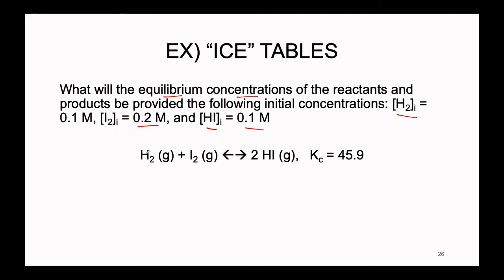We have the reversible reaction H2 + I2 ⇌ 2HI, with an equilibrium constant Kc equal to 45.9, meaning a pretty equal balance between reactant and product. We're given initial concentrations: H2 = 0.1 M, I2 = 0.2 M, and HI = 0.1 M. We start by laying out these concentrations underneath the reactants and products in our chemical equation, treating this like a table with the header above and row labels telling us what we're filling in.